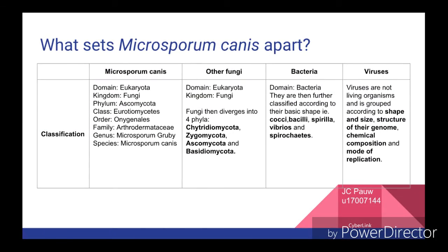Hi, it's Jakob Espo. So what sets Microsporum canis apart? Looking at classification, it belongs to the domain Eukaryota, the kingdom Fungi and phylum Ascomycota. Further down, it belongs to the genus Microsporum. Other fungi also belong to the domain Eukaryota and the kingdom Fungi, but then split off into four phyla: Chytridiomycota, Zygomycota, Ascomycota and Basidiomycota.